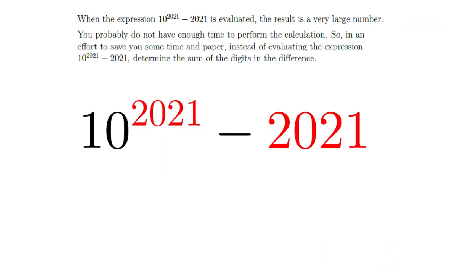I've made that problem just a little bit smaller and I'll keep shrinking it down to give us some room to work. Clearly, as the problem suggests, we're not going to actually calculate 10 to the exponent 2021 and work our way through. But there is some stuff we can use. I'm going to stumble my way through this solution and see if we can pattern some things out.